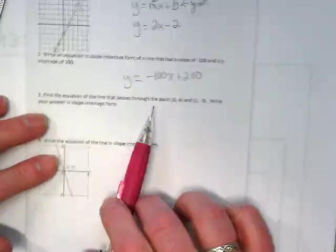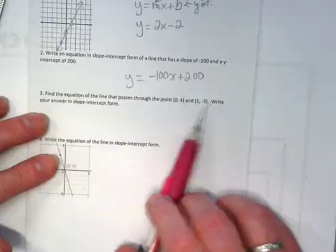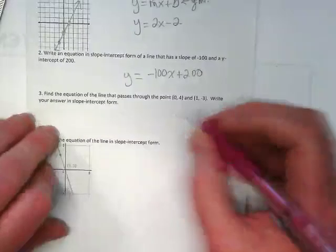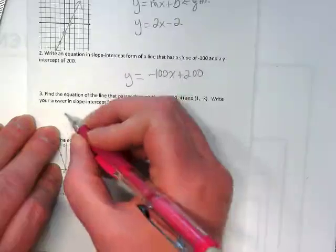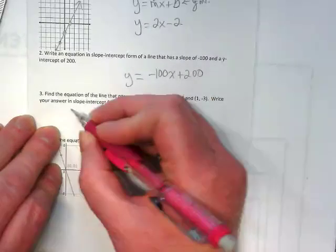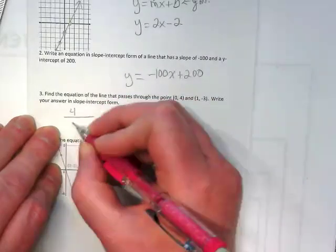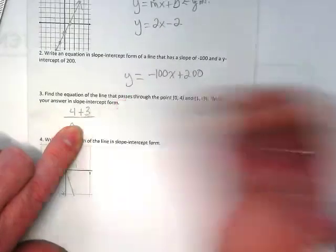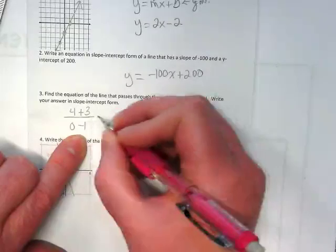Find the equation of the line that passes through the point 0, 4 and 1, negative 3. Write your answer in slope-intercept form. Well, I've got two points here, so I'm going to use 4 minus negative 3 over 0 minus 1 to get my slope.